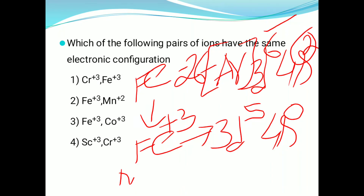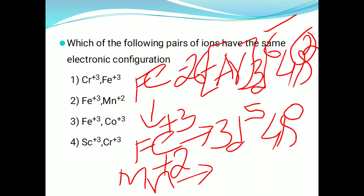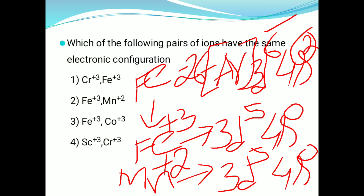Mn²⁺ electronic configuration is also 3d⁵ 4s⁰. So Fe³⁺ and Mn²⁺ both have the same electronic configuration — 3d⁵ 4s⁰. Therefore, Fe³⁺ and Mn²⁺ is the correct ion pair. Thank you, students.